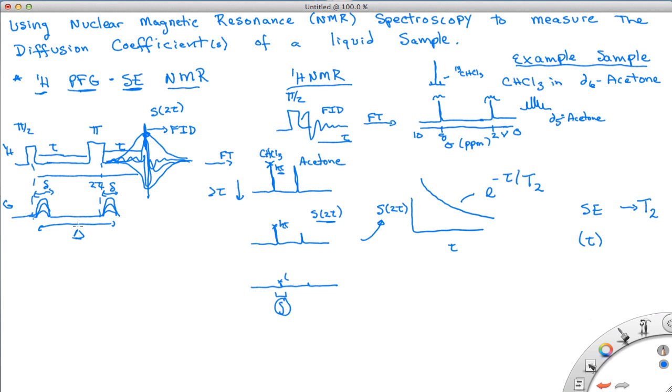So what these gradients do is basically this first gradient dephases the magnetization, and this one rephases it. And if the molecules have diffused in that time big delta, then it's not able to rephase the magnetization.